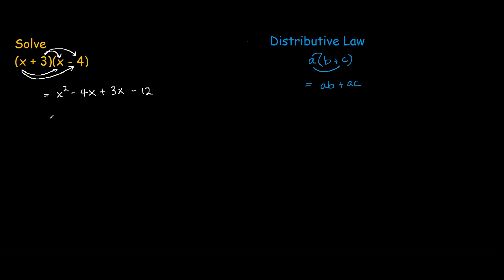So let's go ahead and simplify that. So x squared, negative 4x plus 3x is negative x, then negative 12. And that's as far as you can simplify it, and that's the answer to this problem.